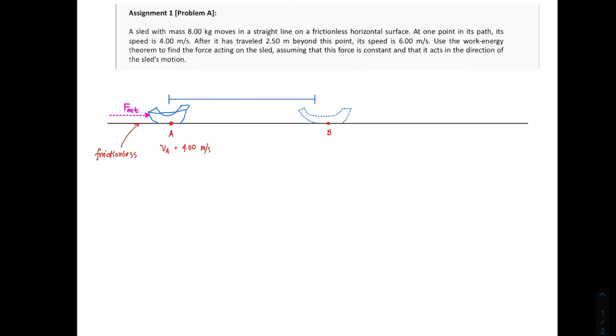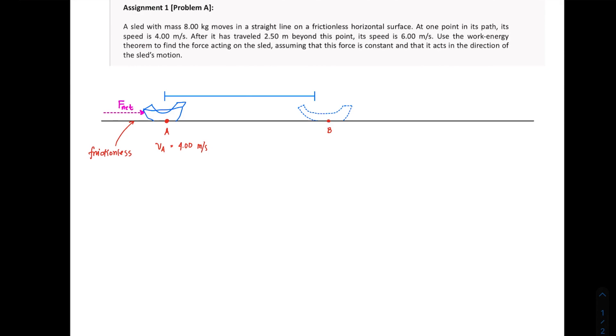Here is the first problem on the work energy theorem. The problem states that a sled with a mass of 8 kg moves in a straight line on a frictionless horizontal surface.